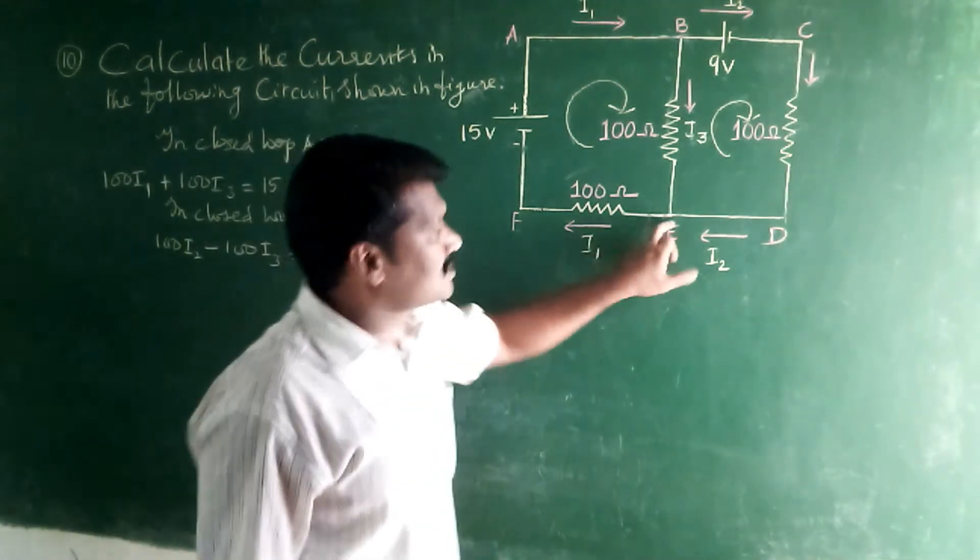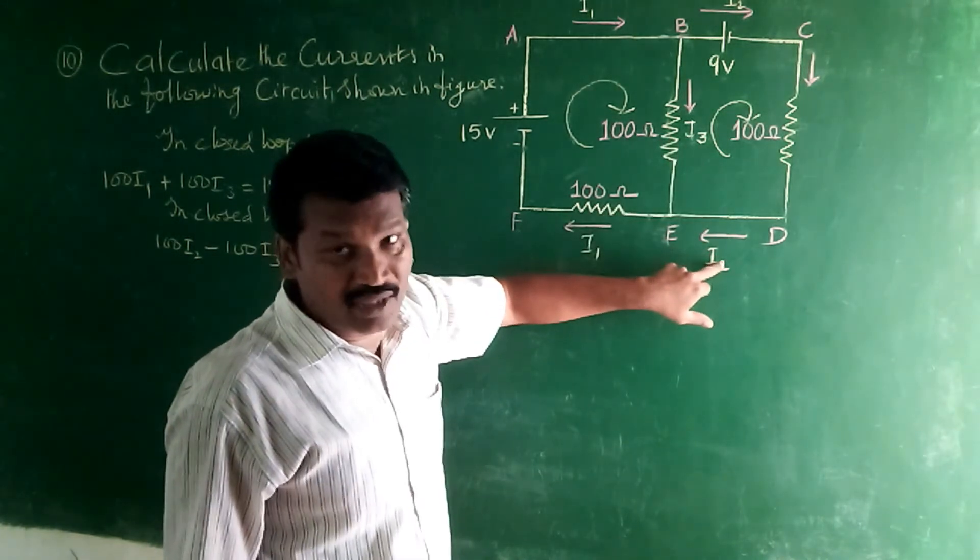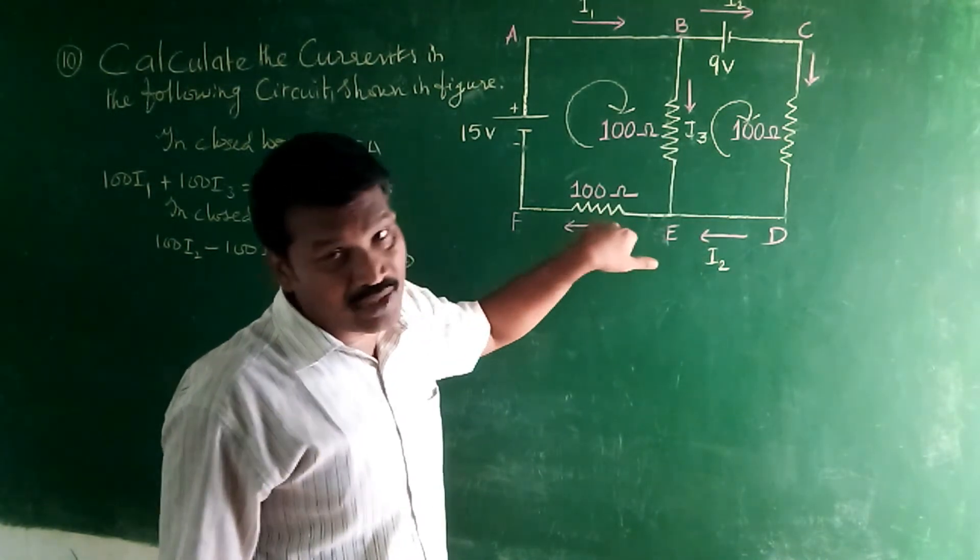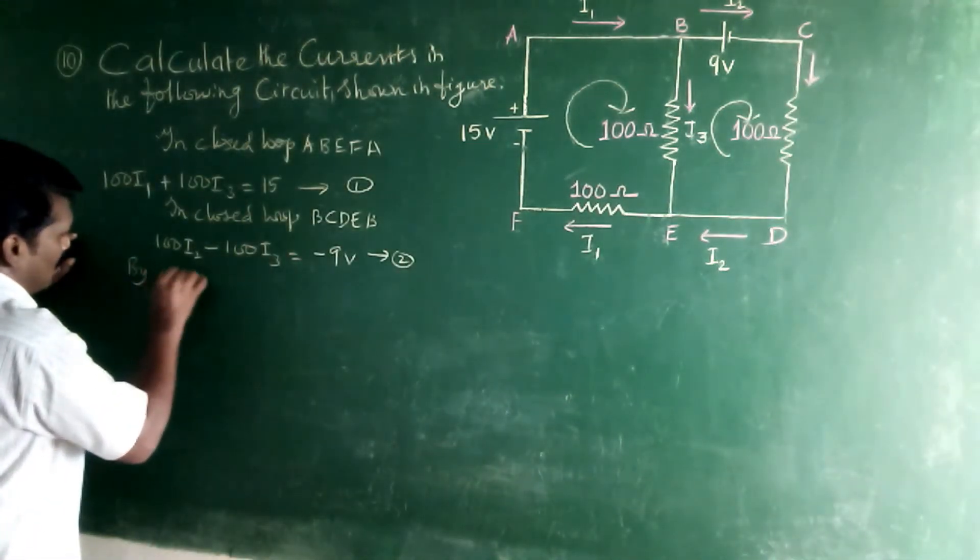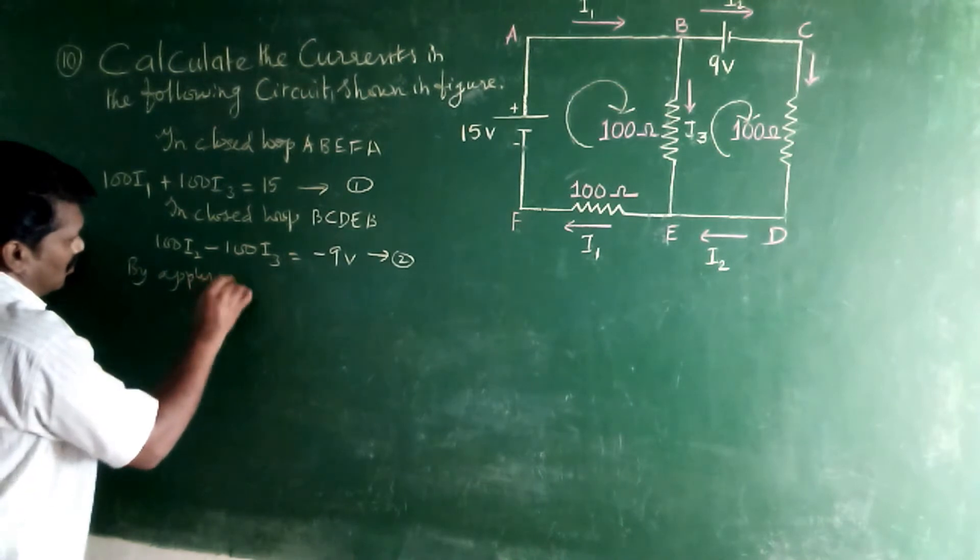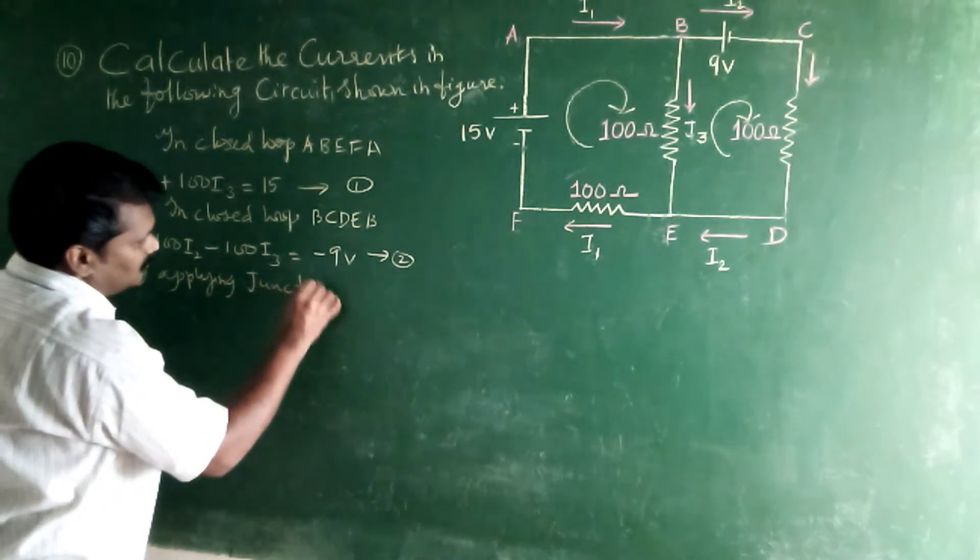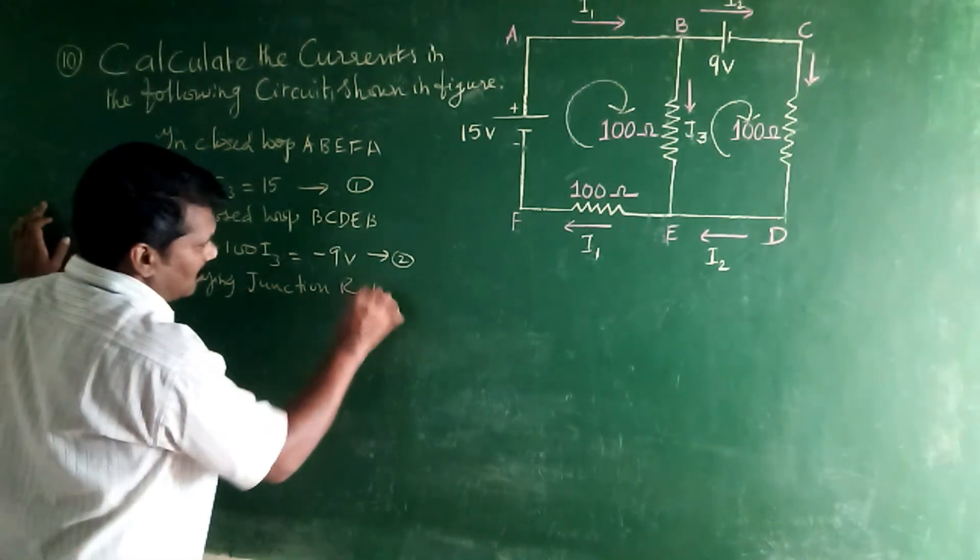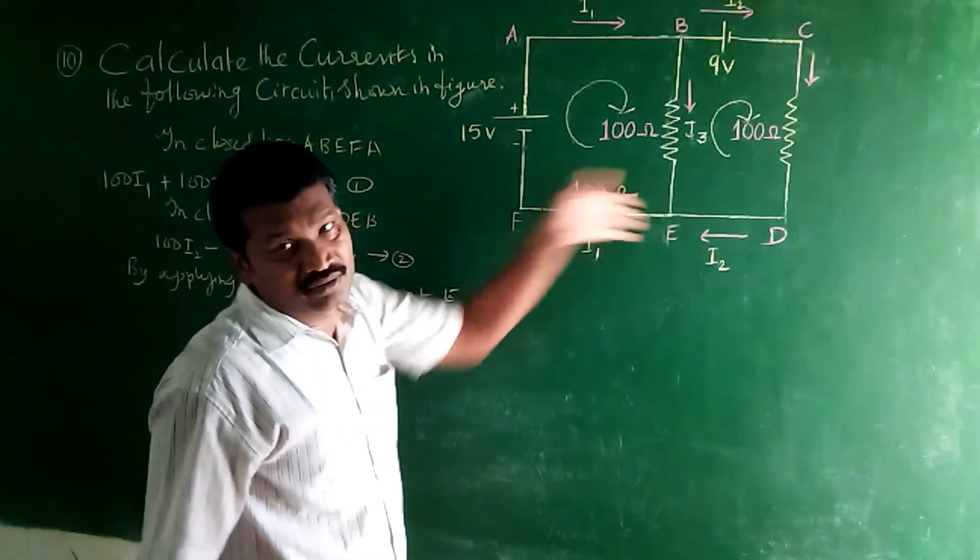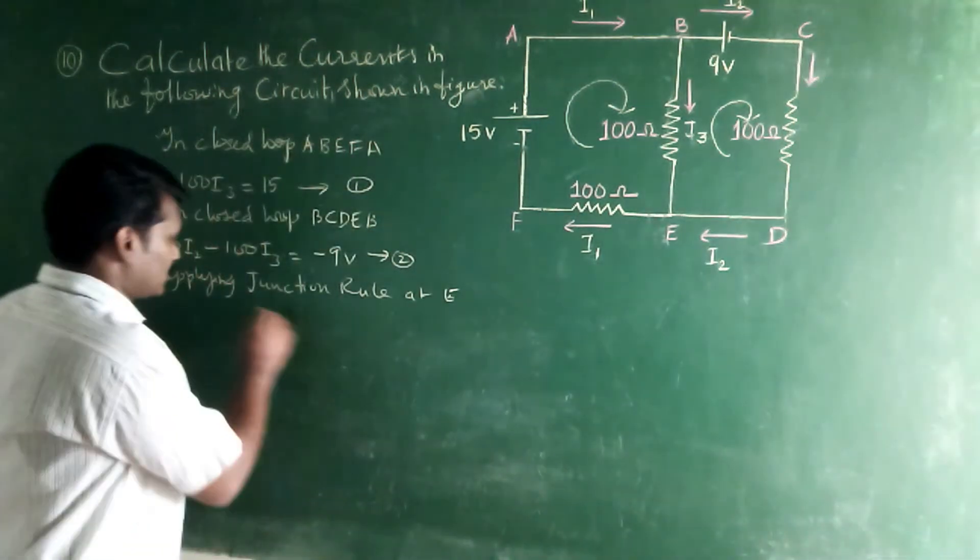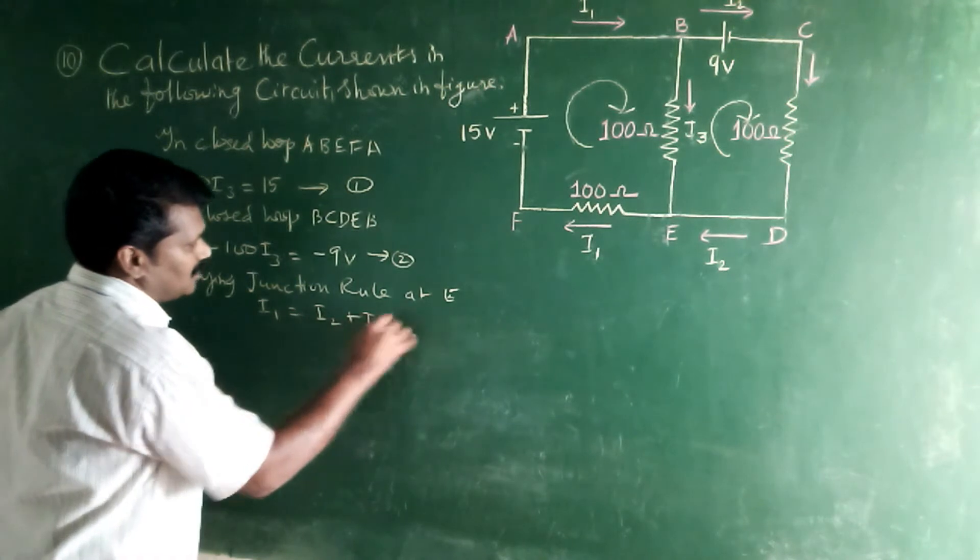Now, consider this junction, for junction E. I3 and I2 are incoming currents, while I1 is outgoing current. So, by applying junction rule, that is Kirchhoff's rule. At point E, the sum of incoming is equal to outgoing current.